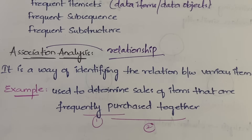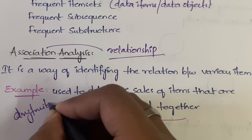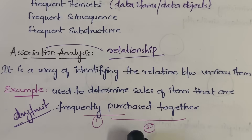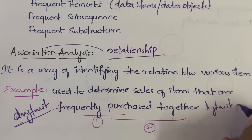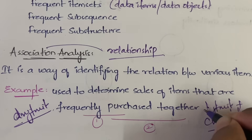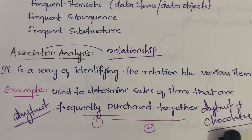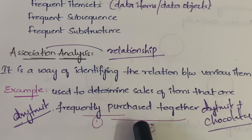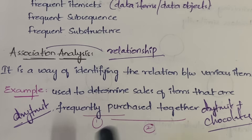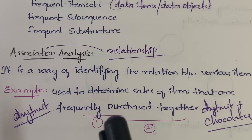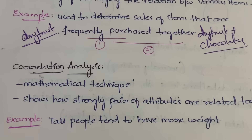For example, in a supermarket, suppose dry fruits are frequently purchased items, and dry fruits and chocolates are always purchased together. So dry fruits is one data item and 'purchased together with chocolates' is another. The association analysis identifies the relationship — why dry fruits are frequently purchased and why they are purchased together with chocolates.